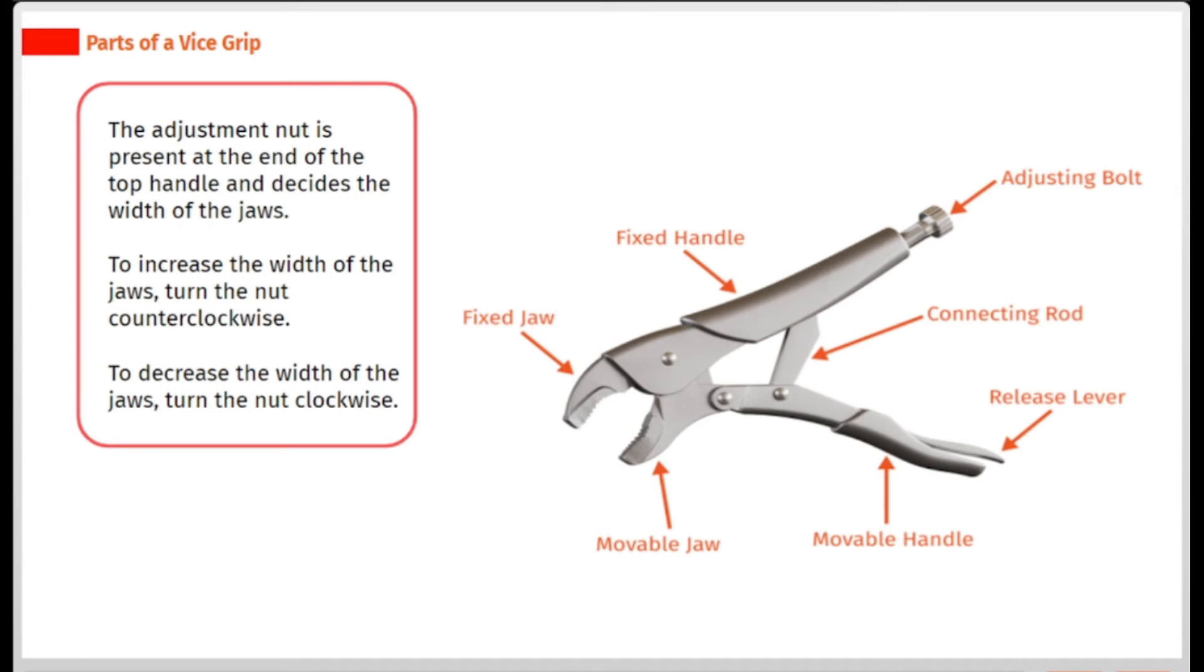To increase the width of the jaws, turn the nut counterclockwise. To decrease the width of the jaws, turn the nut clockwise.